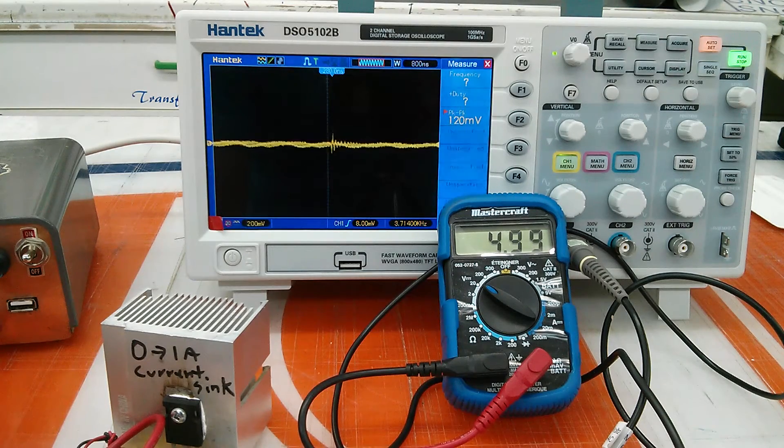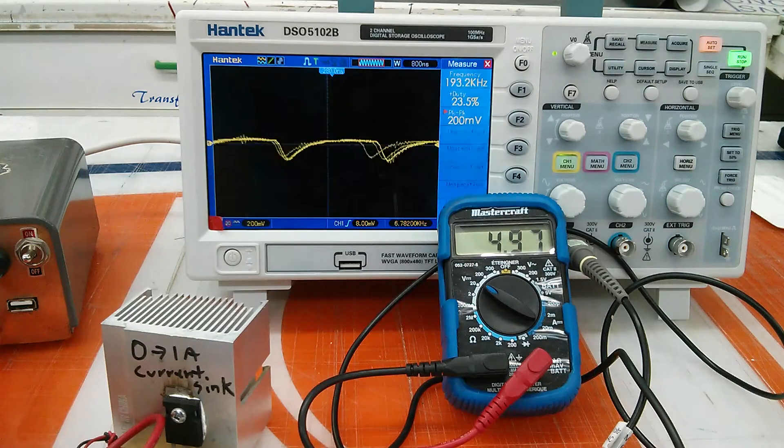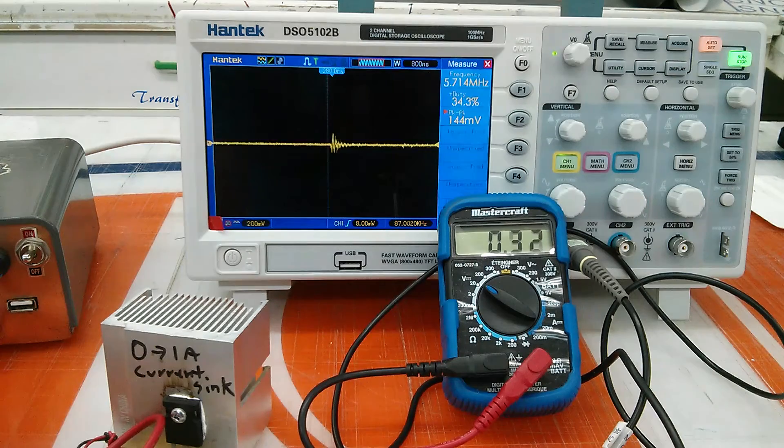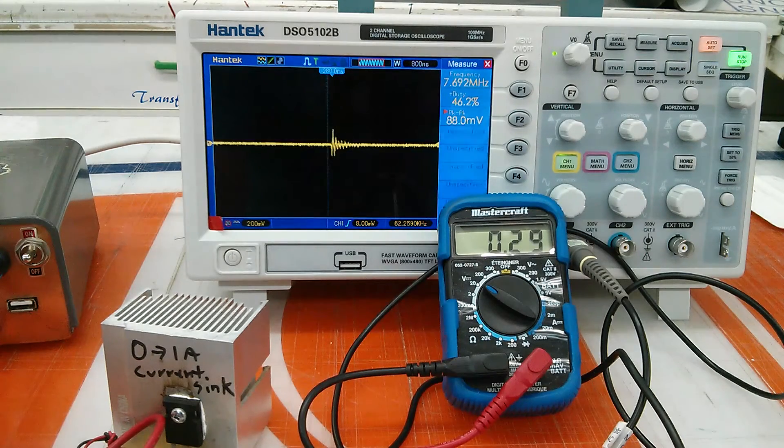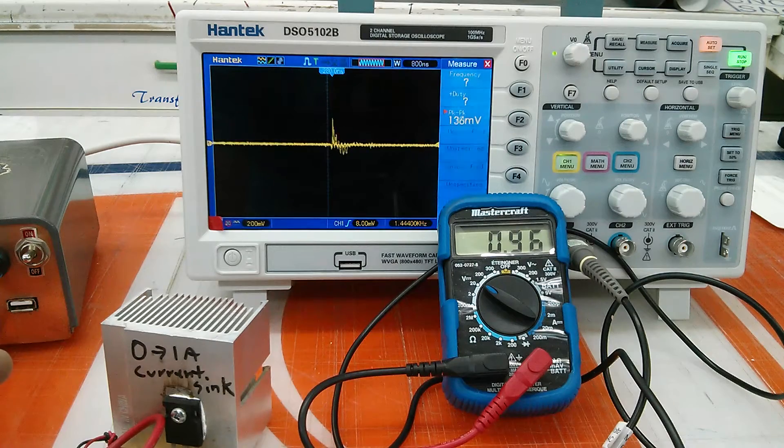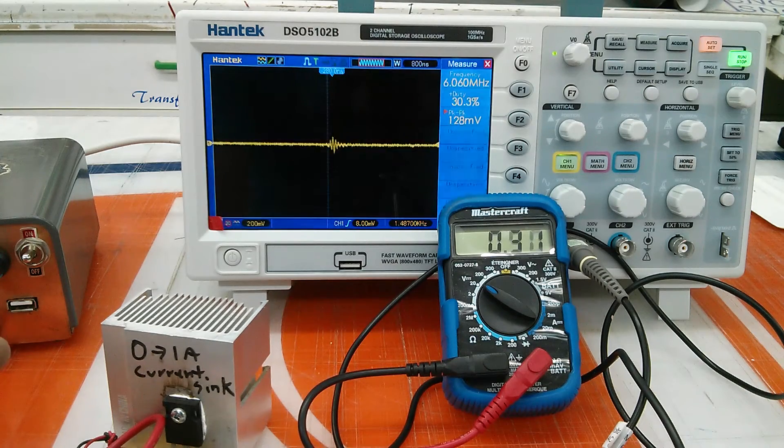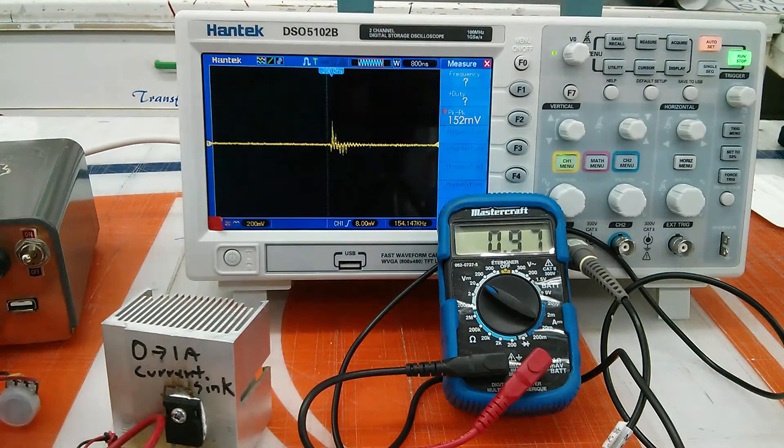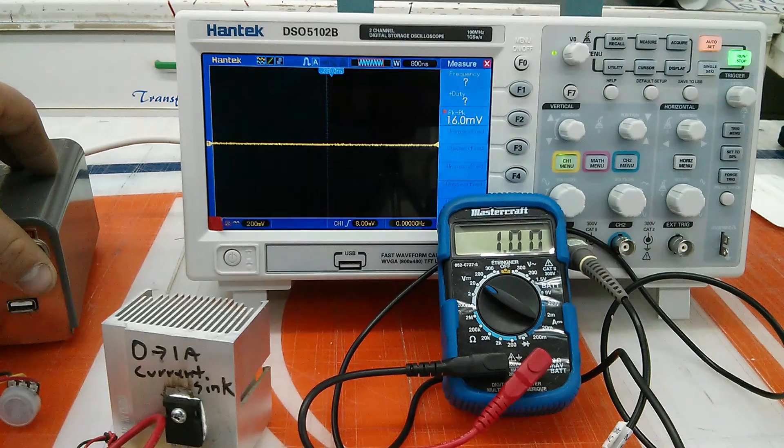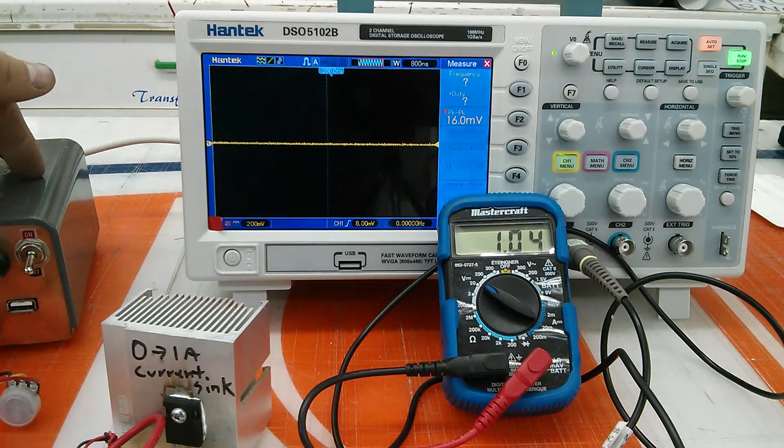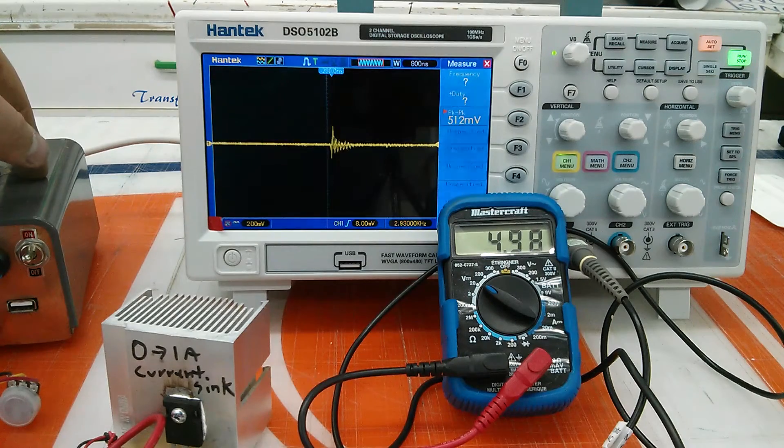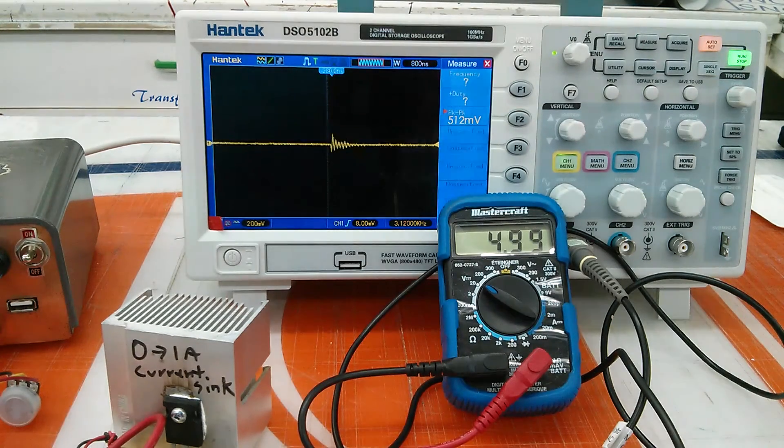Switch it on with no current here. We'll start cranking the current up. You can see it's starting to lose regulation pretty bad. And I mean, yeah, there's just nothing. It's been shut down at that point. Even turning off the current sink. Oh, there we go. Now she's come back. It was probably in thermal shutdown there.